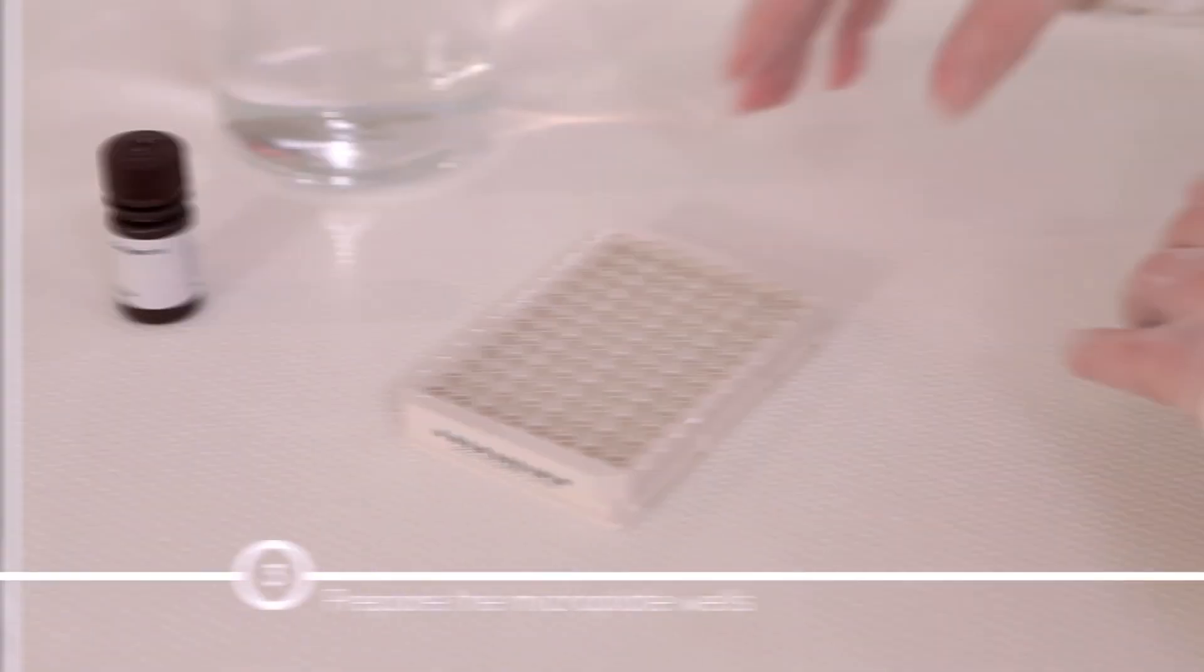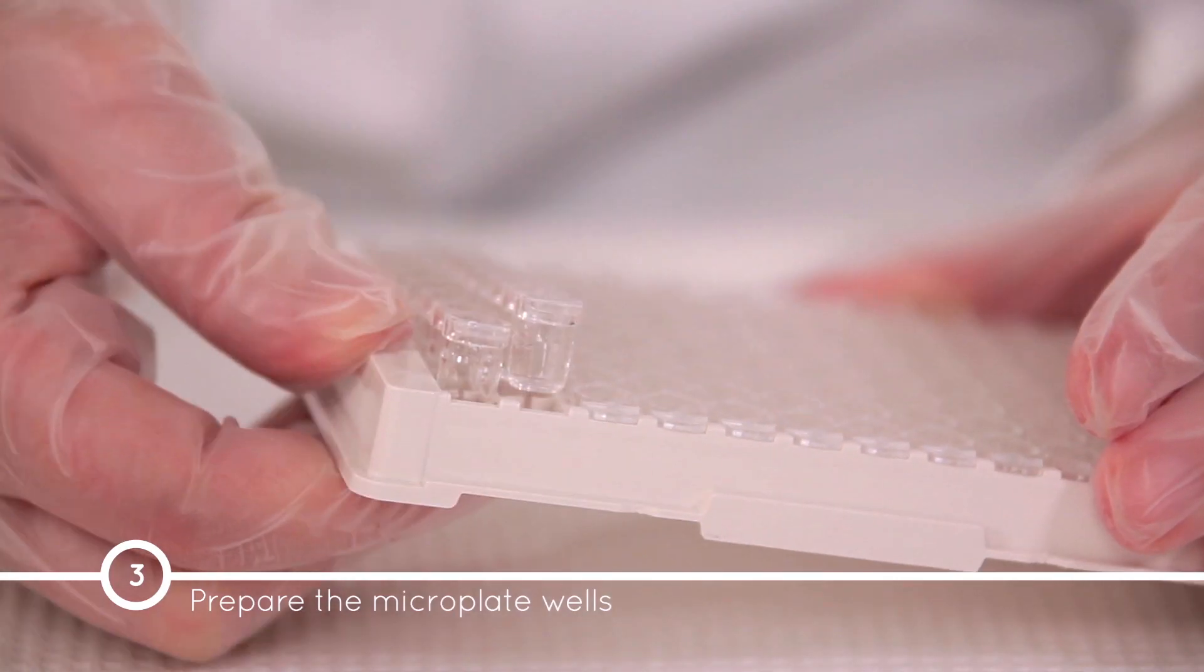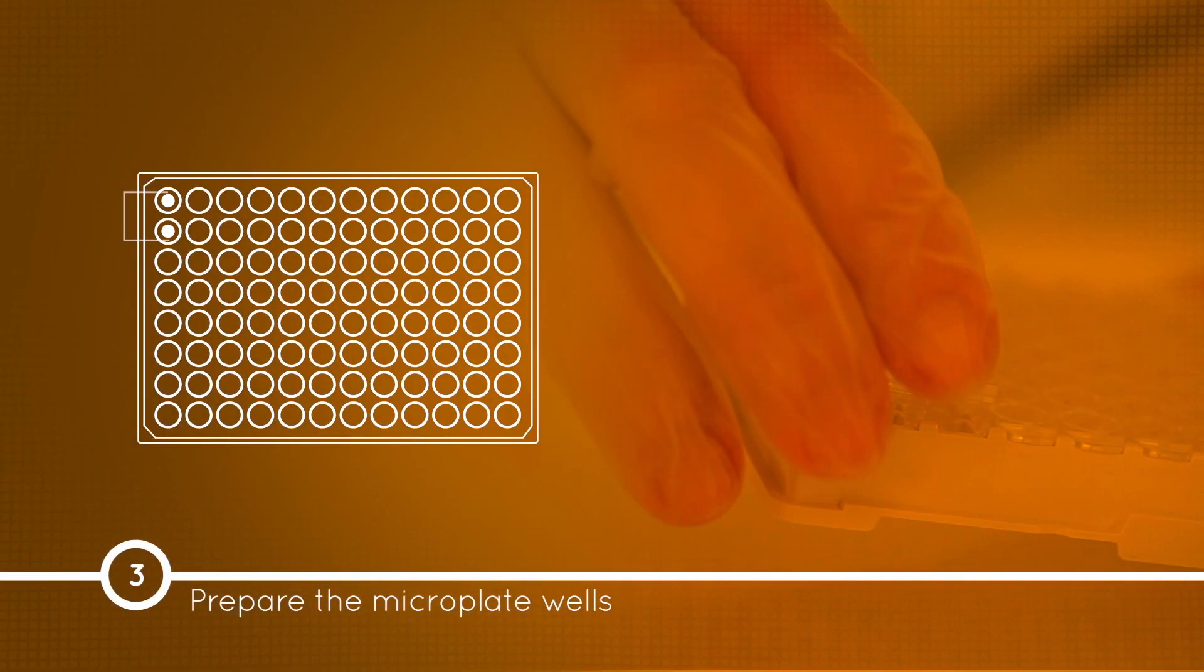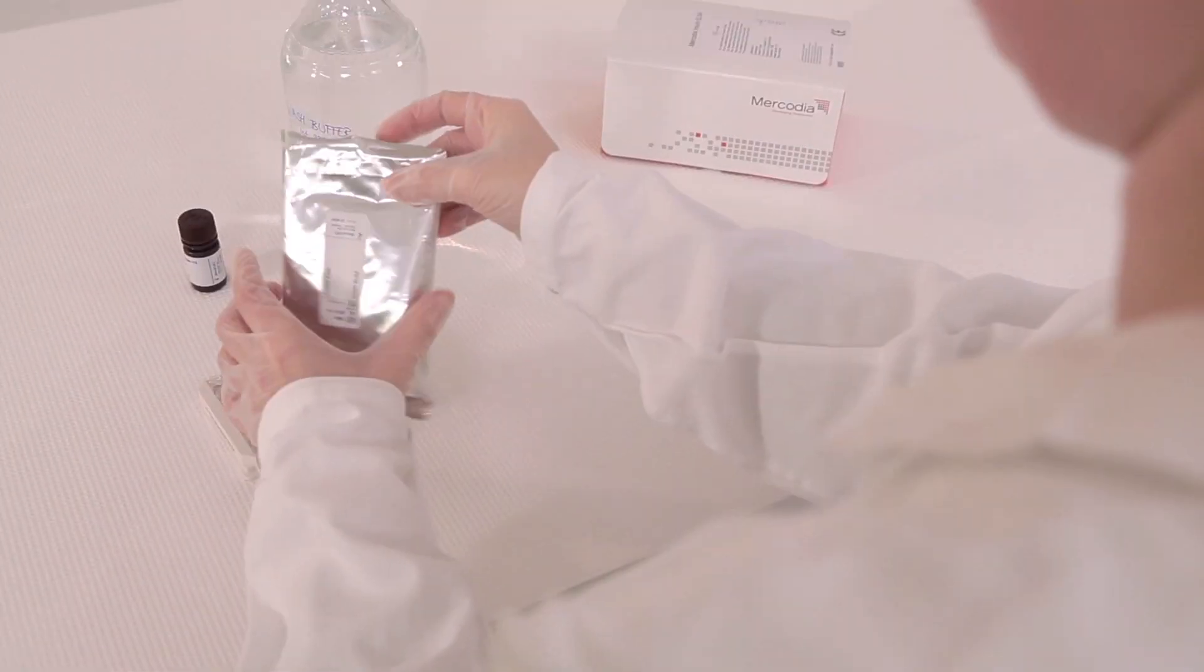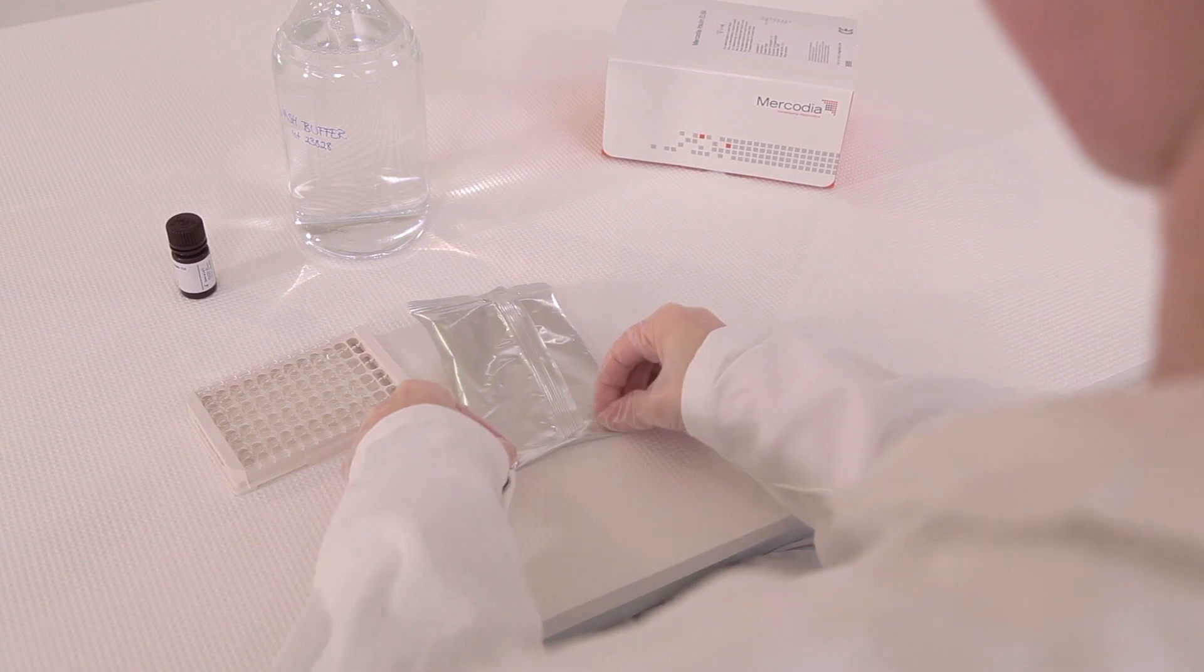Prepare the microplate wells to accommodate calibrators, Mercodia antigen controls, and samples in duplicate. Unused strips can be removed and stored in a sealed bag for two months.